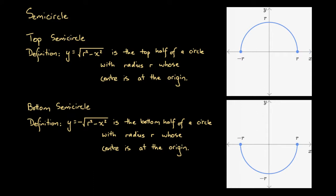Let's start with the top semicircle. The definition is that y equals the square root of r squared minus x squared. This is the top half of a circle with radius r whose centre is at the origin. To the right we have a graphical representation of this algebraic form — sure enough we have the top half of a circle whose centre is at the origin. Each of these points on the curve are r units away from the origin, so that's what we mean by a radius of r.